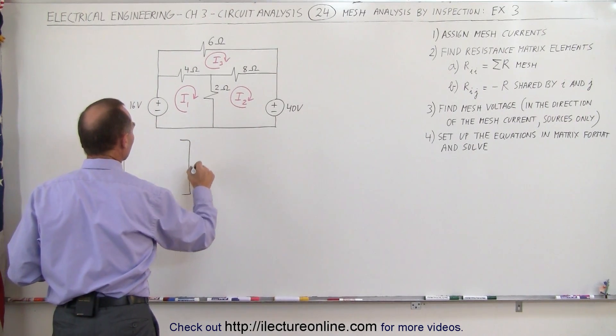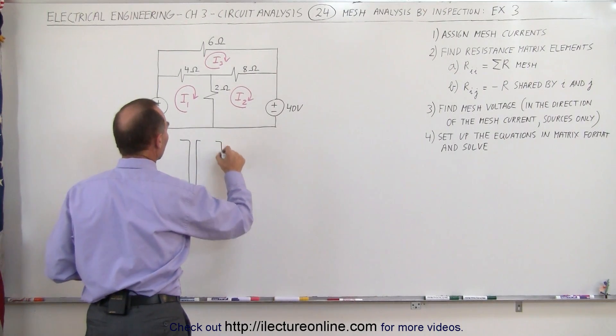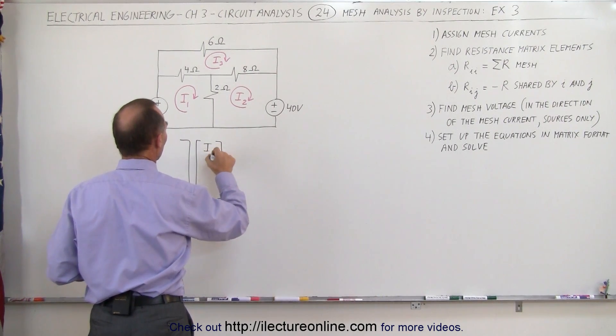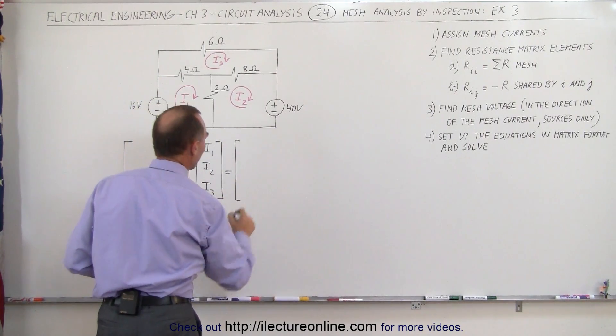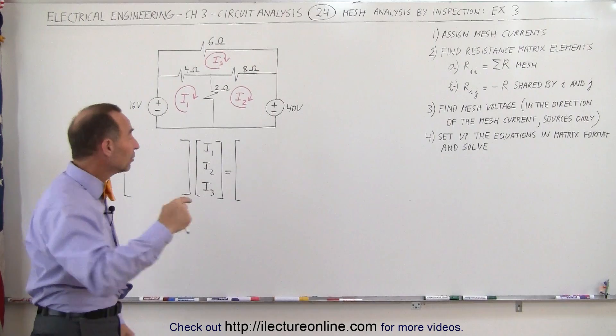This is going to be a 3x3 matrix. We multiply that times the three unknowns of the three unknown currents, I1, I2, and I3. And that is going to be equal to the sum of the voltages as we go around each mesh.